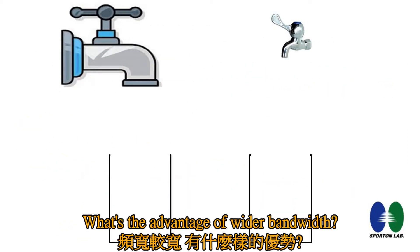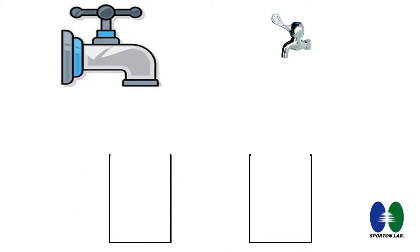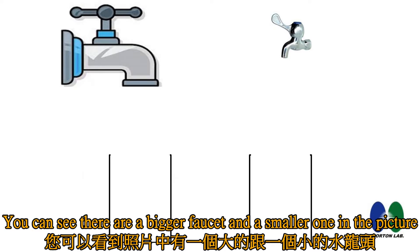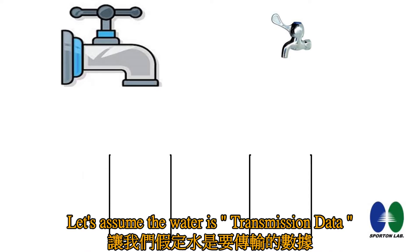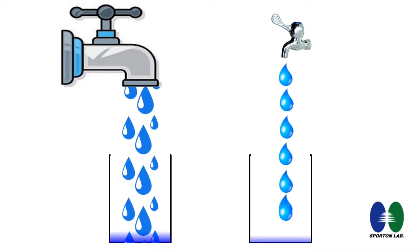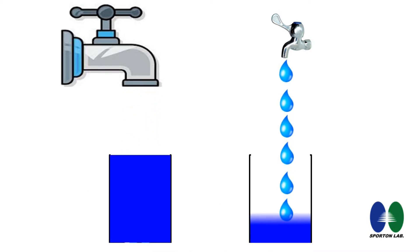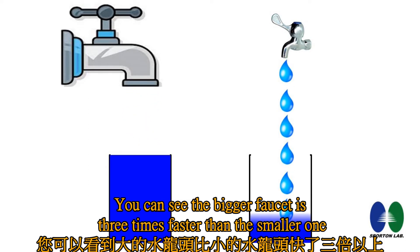What is the advantage of wider bandwidth? You can see there are a bigger faucet and a smaller one in the picture. Let's assume the water represents transmission data. You can see the bigger faucet is 3 times faster than the smaller one.